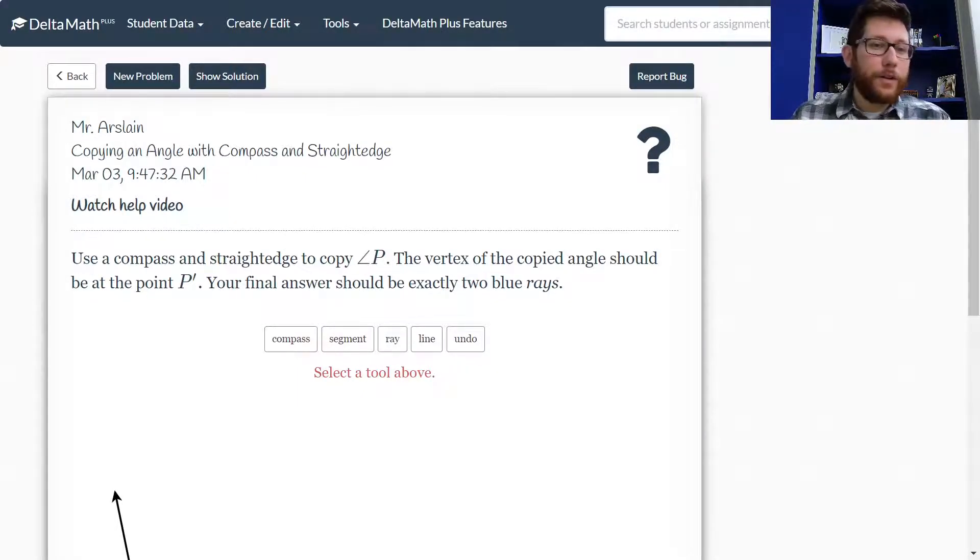Hey Mathletes, welcome back. We are looking at another construction here in Delta Math. We are looking at copying an angle with a compass and a straight edge. So remember our compass makes circles, our straight edge makes straight lines.